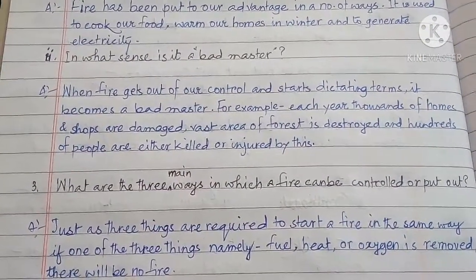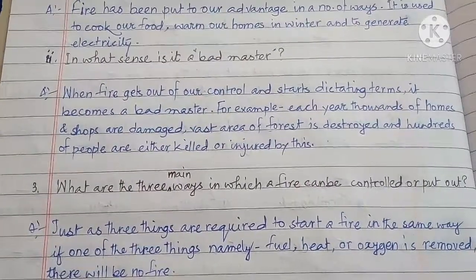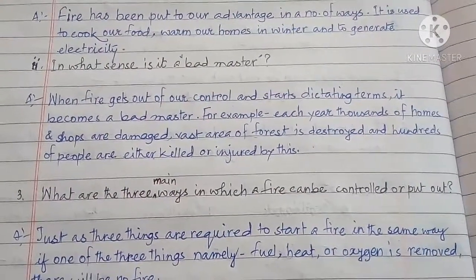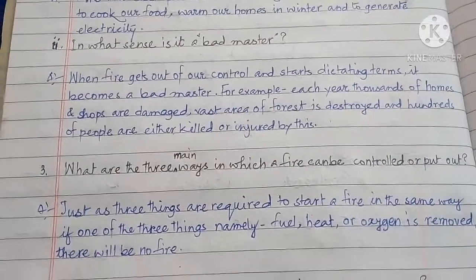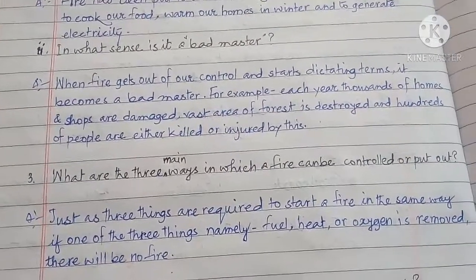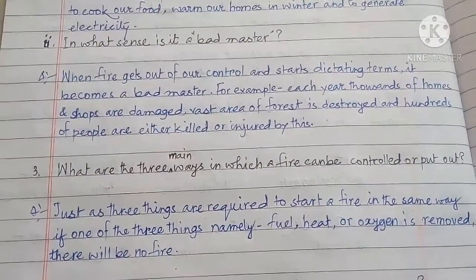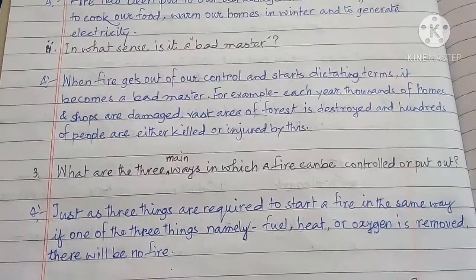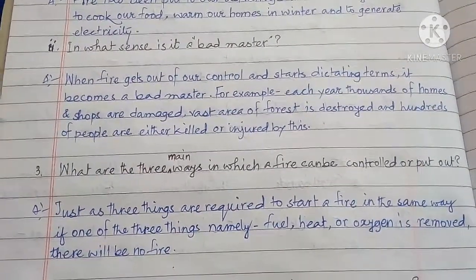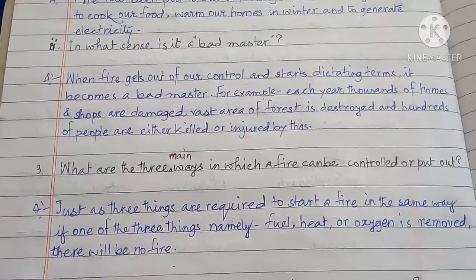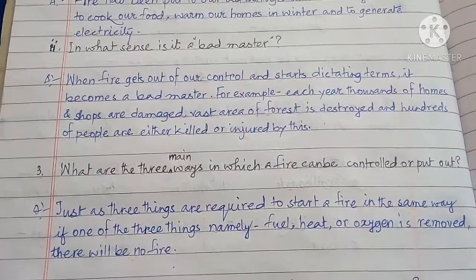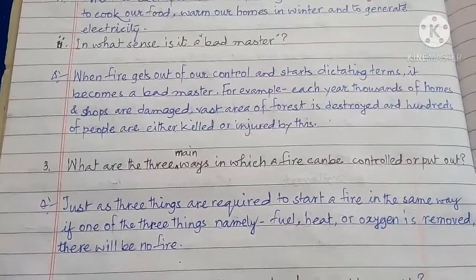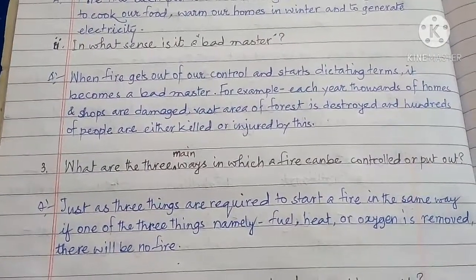Number three: What are the three main ways in which a fire can be controlled or put out? Answer: Just as three things are required to start a fire, in the same way, if one of the three things — namely fuel, heat, or oxygen — is removed, there will be no fire.